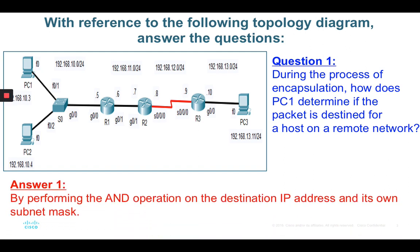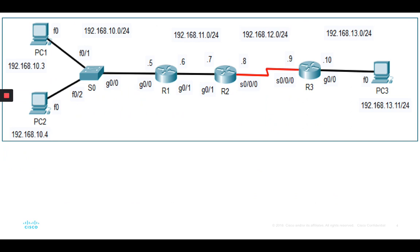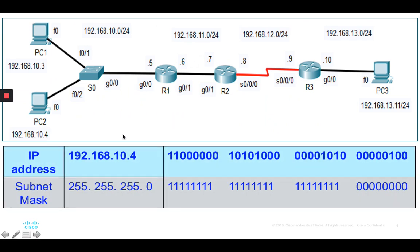By performing the AND operation on the destination IP address and its own subnet mask, you can identify what network the destination belongs to. For example, take IP address 192.168.10.4, which is PC2, with subnet mask 255.255.255.0. When you do the AND operation, you want to check: does 192.168.10.4 belong to network 192.168.10.0, 11.0, 12.0, or 13.0?